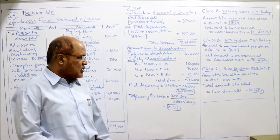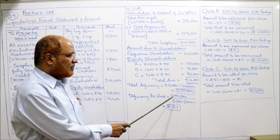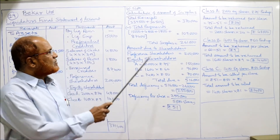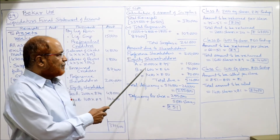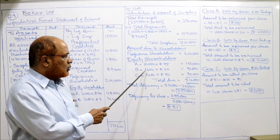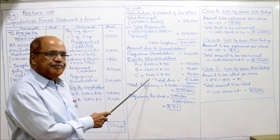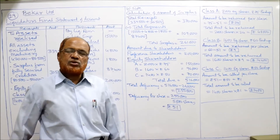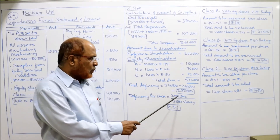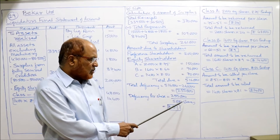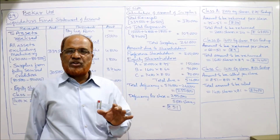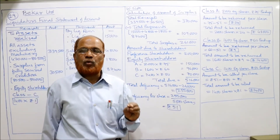Per share deficiency: 2,55,000 divided by total 5,000 shares (2,000 + 1,600 + 1,400) = 51 rupees per share deficiency. We now compare this 51 rupees deficiency with the paid-up value per share to find out how much to return or call from shareholders.